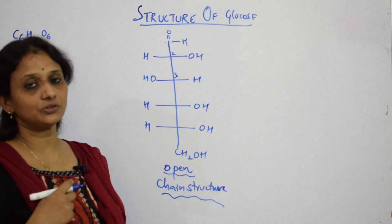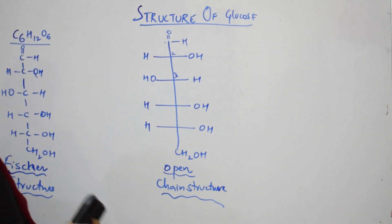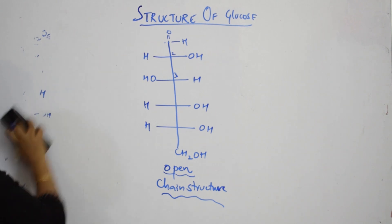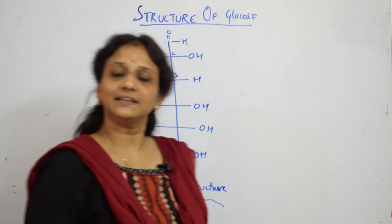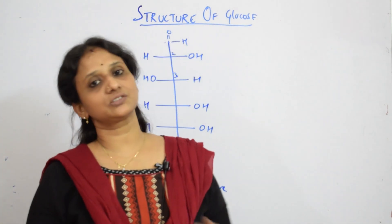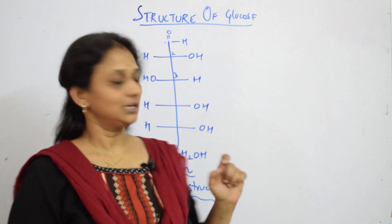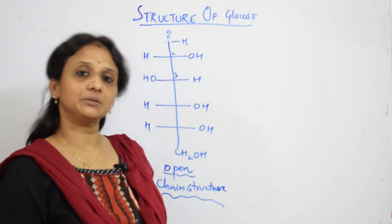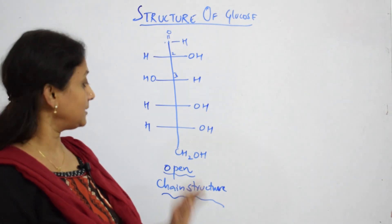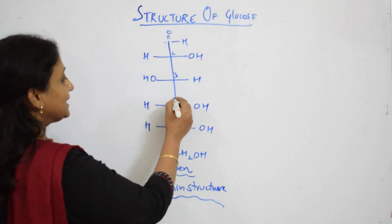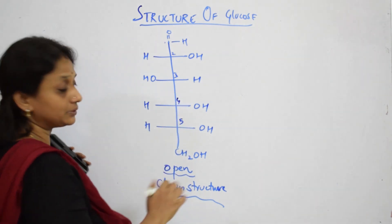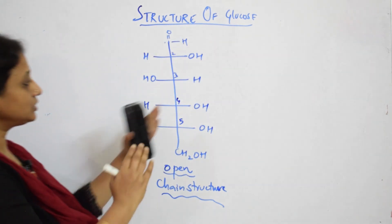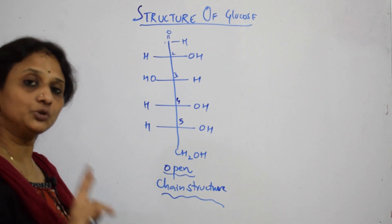This is your open chain structure of D-glucose. Now, D-glucose and fructose exist in the form of cyclic structures in nature — they form a ring. The ring forms between the fifth carbon and the first carbon. So in nature, a ring forms between the fifth carbon and the first carbon.